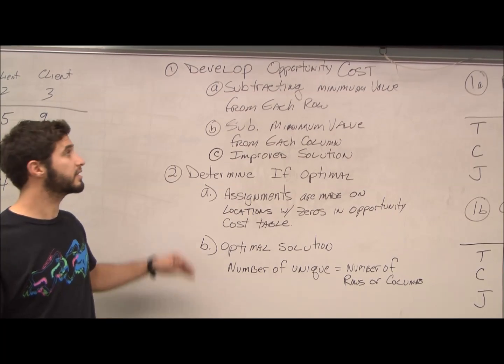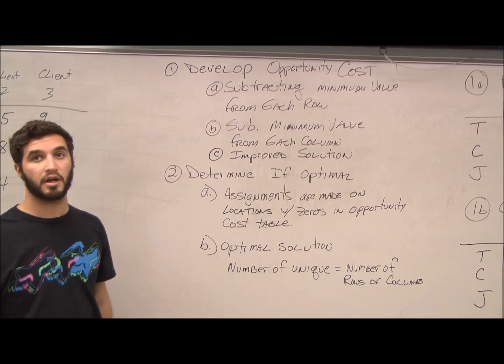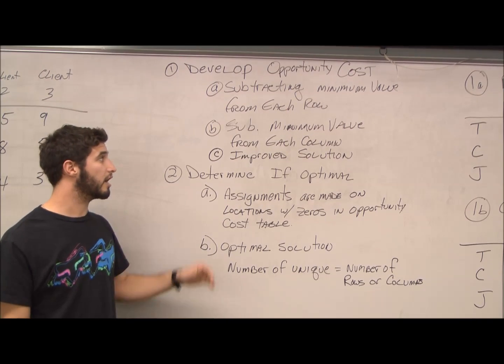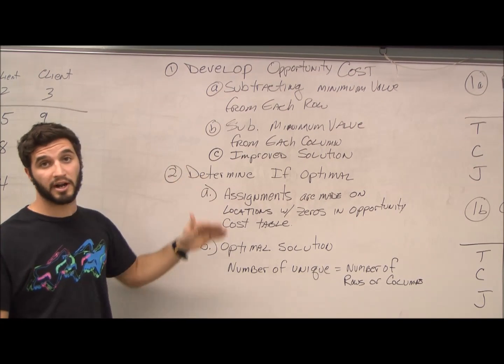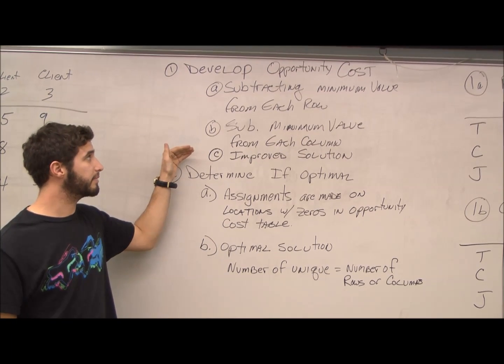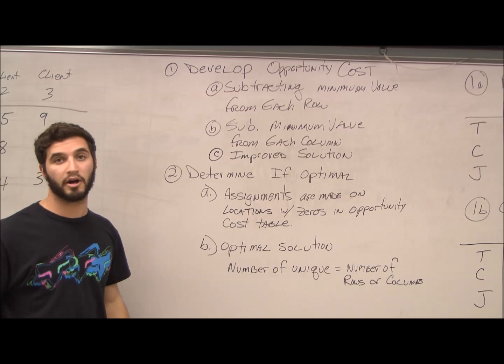Our first order of business is to develop opportunity costs. The first step is to subtract minimum values from each row. The second step will be to subtract the minimum values from each column. And our last step is to acquire our improved solution.